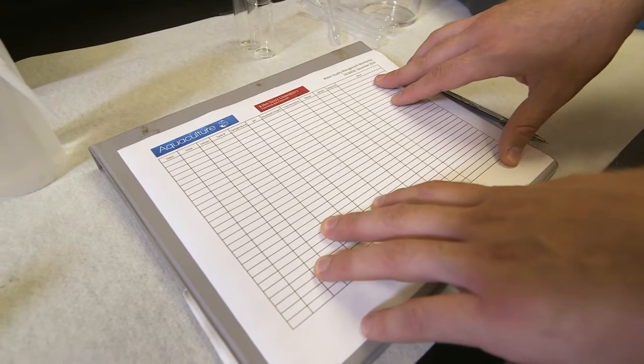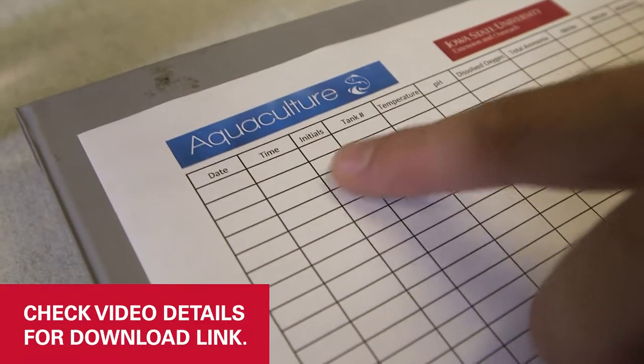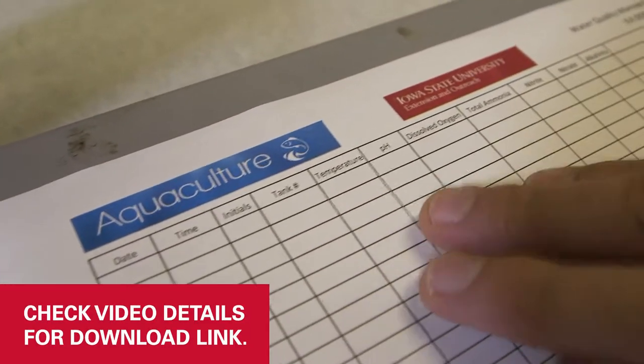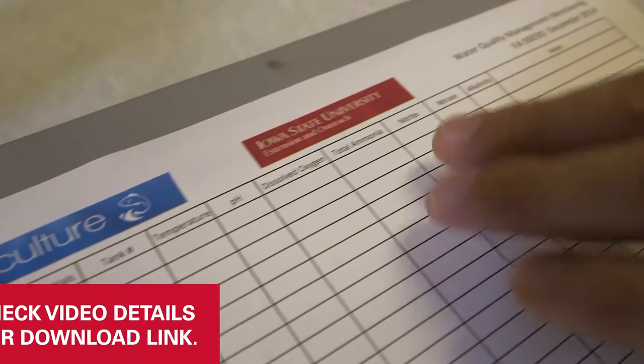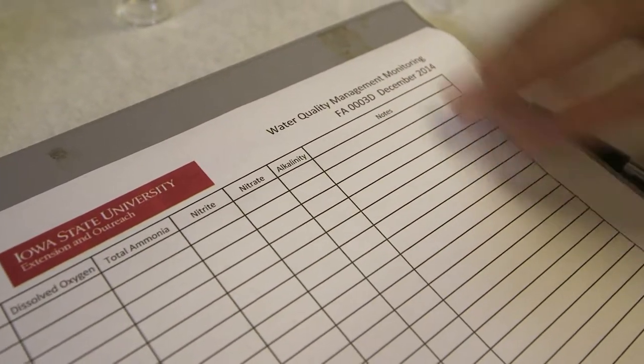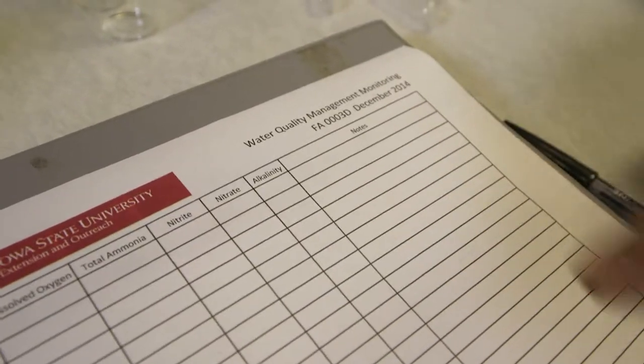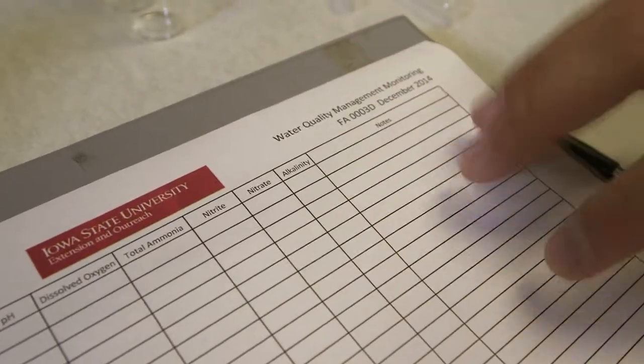We have a monitoring data sheet here so we can record when we did our testing, who did it, what tank it came from, what our temperature, pH, dissolved oxygen, ammonia, nitrite, nitrate and alkalinity are. And if we see any changes in water chemistry over time, we can record those here.